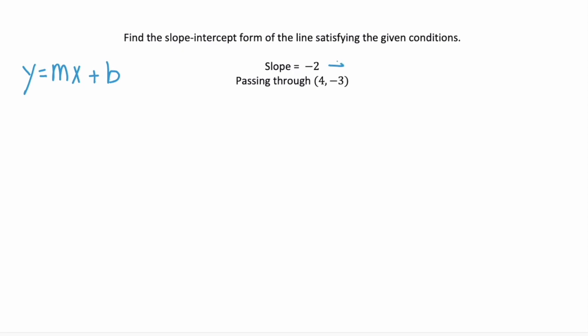Well remember slope is the same as the variable m. So we know so far y equals negative 2x plus b.